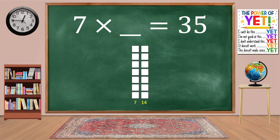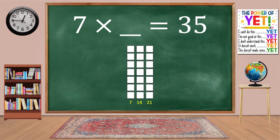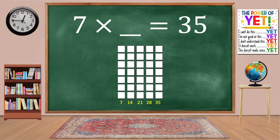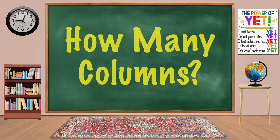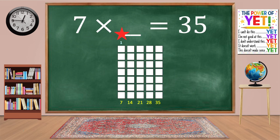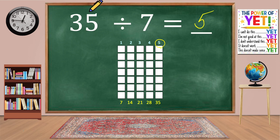Skip counting by sevens: 7, 14, 21, 28, 35. We've reached 35. How many columns do we have? One, two, three, four, five. Seven times five equals 35.